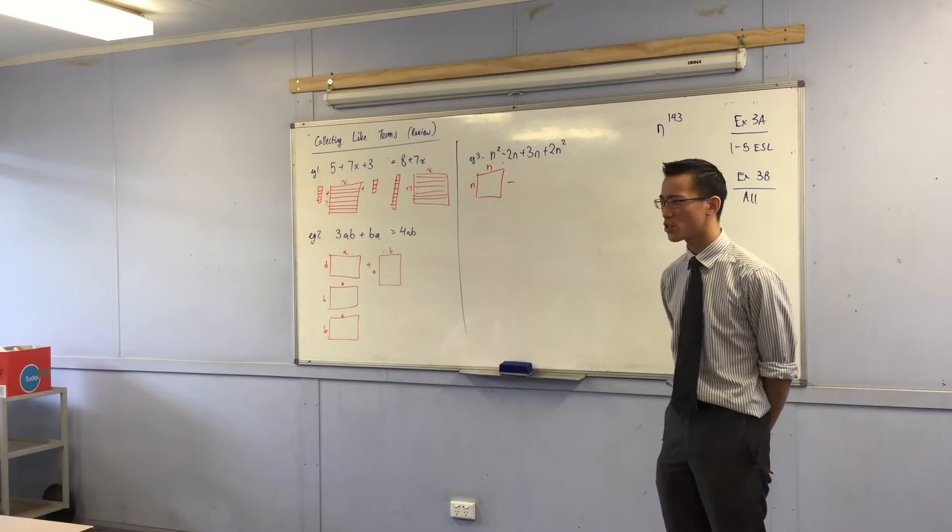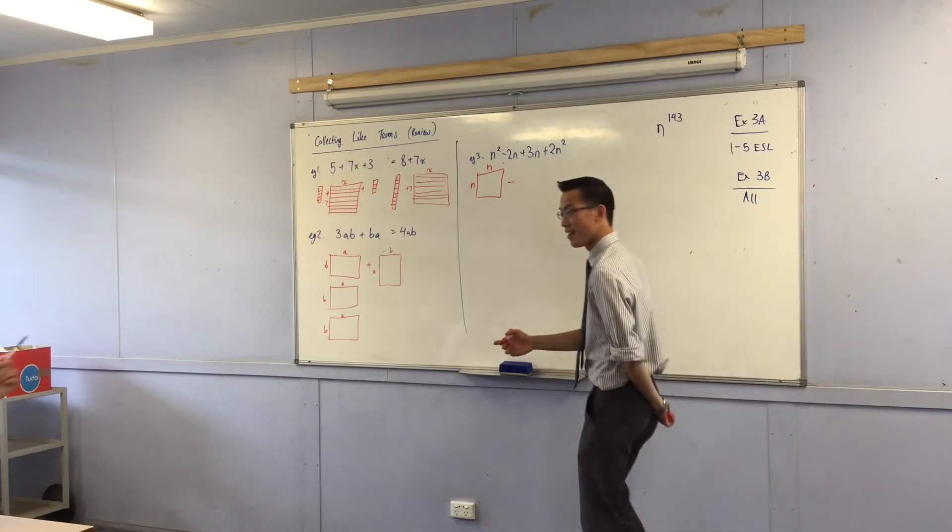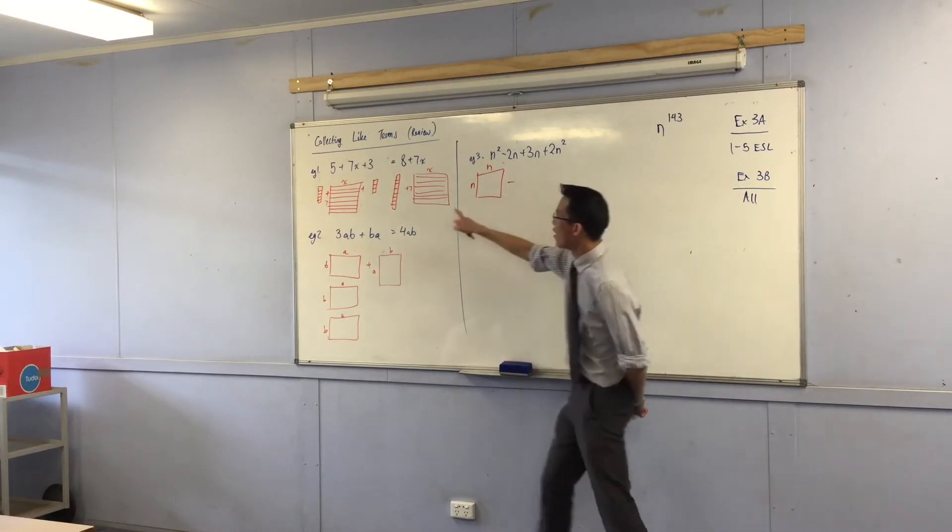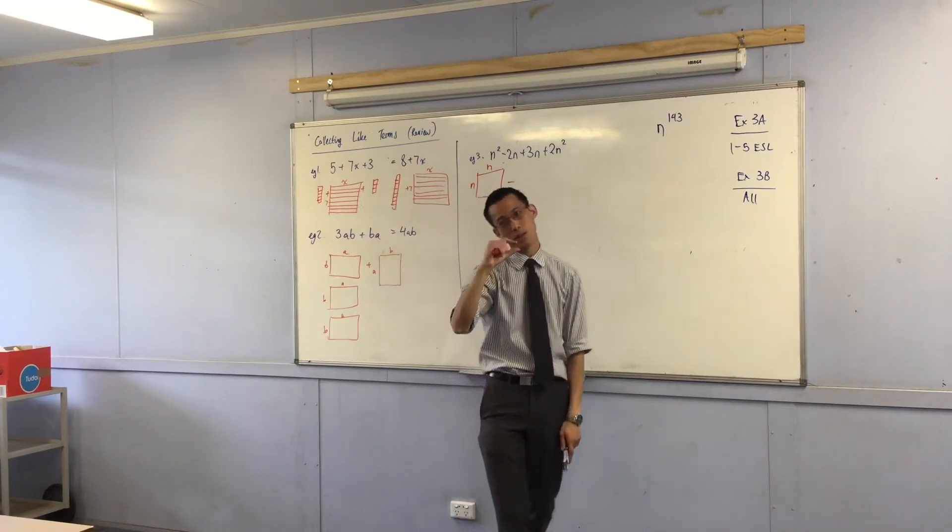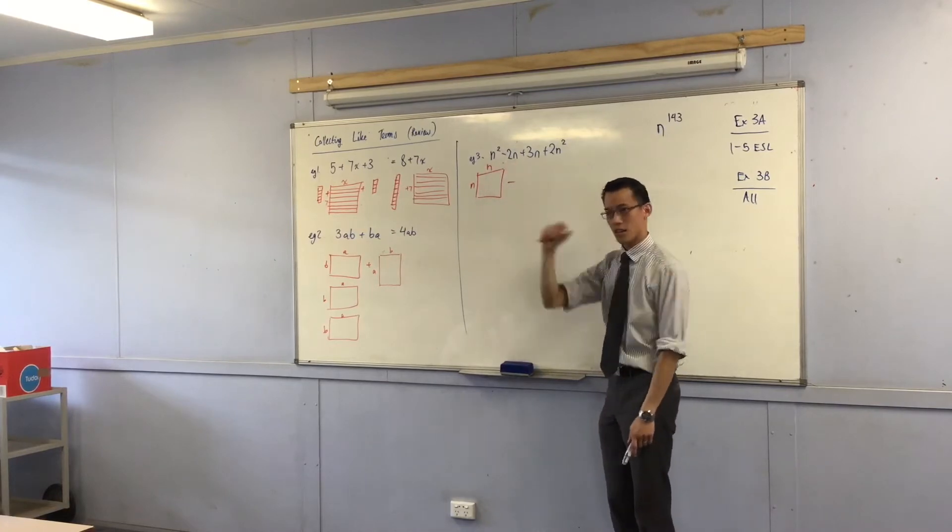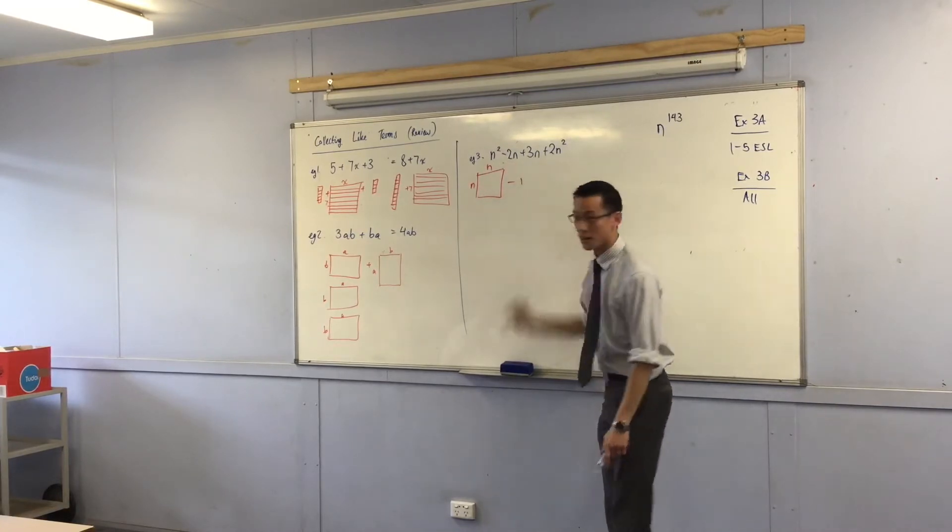How would you draw 2n? Now you can see if I did 2 that would be just one little block and one little block, but actually this is 2n so it can be 2 high like that.